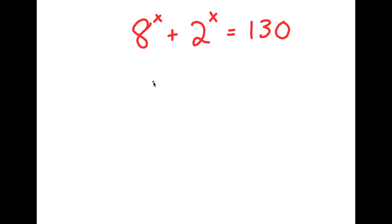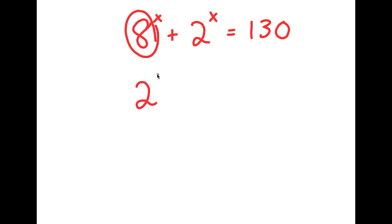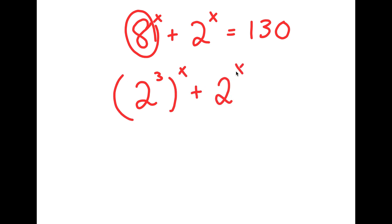So in this problem, I have 8 to the power of x plus 2 to the power of x is equal to 130. I'm going to first start by rewriting 8 as 2 to the power of 3. So I get 2 to the power of 3 to the power of x plus 2 to the power of x is equal to 130.